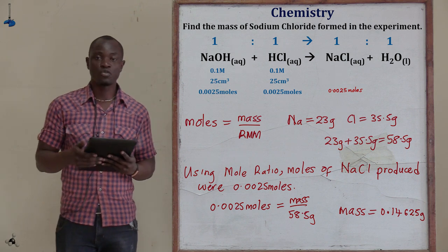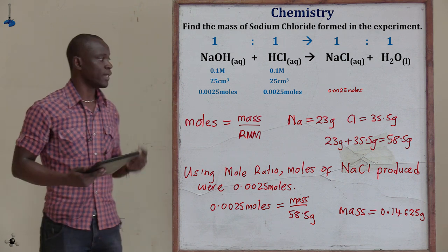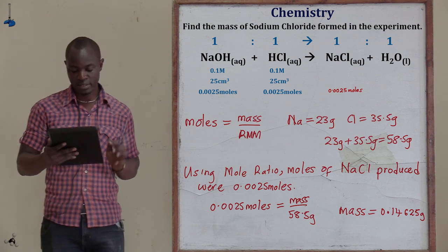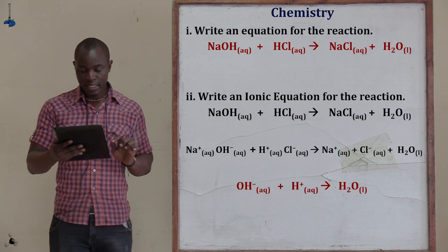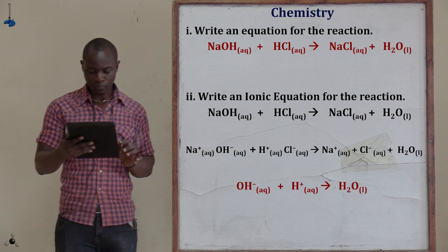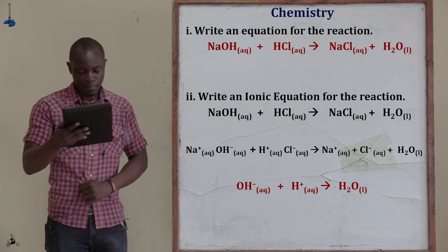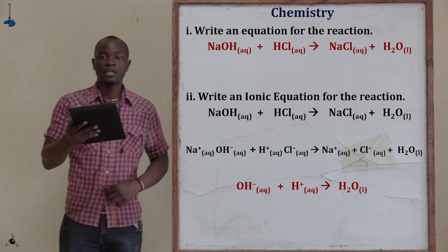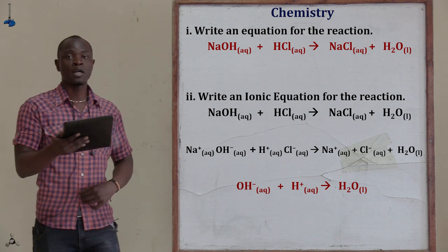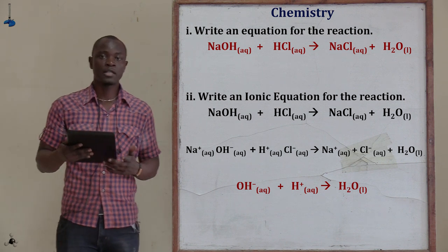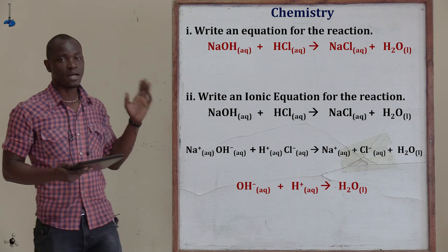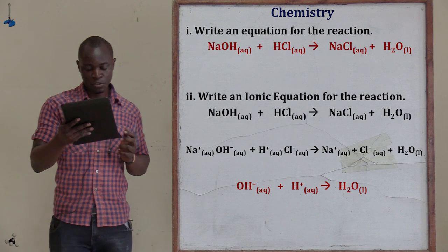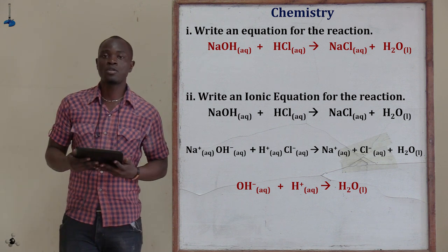Let's go to the last question. Roman numeral one asks: write an equation for the reaction that was formed. We already have the stoichiometric equation: NaOH + HCl → NaCl + H₂O. Roman numeral two asks: write an ionic equation for the reaction.